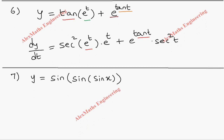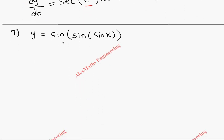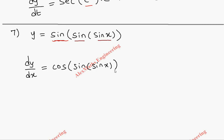Next: we have three nested functions — the outermost is sine, the next inner function is sine, and the innermost is again sine, i.e., sin(sin(sin x)). For dy/dx, we start from the outermost function: differentiating the outermost sine gives cos, with the inner functions written as they are. Then we differentiate the next sine, which again gives cos, writing the innermost sin x as it is. Finally, differentiating the innermost sin x gives cos x. So the result is cos(sin(sin x))·cos(sin x)·cos x.